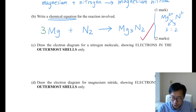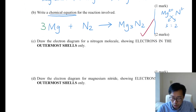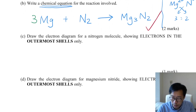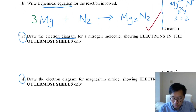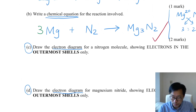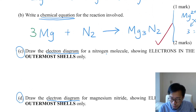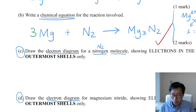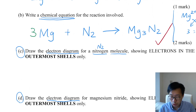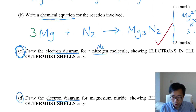Before the end of this video, I would like to go on with this question. In part C and part D, you are asked to draw electron diagrams. Part C first: the nitrogen molecule. Earlier you already wrote N2 for nitrogen in part B, but this time in part C you are required to draw the electron diagram showing electrons in the outermost shells only.